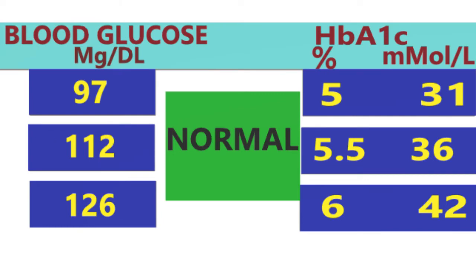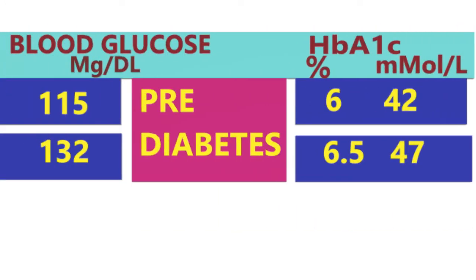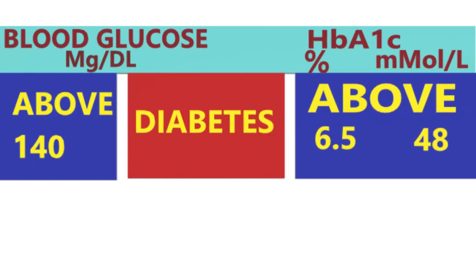Normal range is below 6%, i.e. below 42 millimoles per mole. Pre-diabetic range is 6% to 6.4%, i.e. 42 to 47 millimoles per mole. Diabetes is diagnosed at 6.5% and over, i.e. 48 millimoles per mole and over.